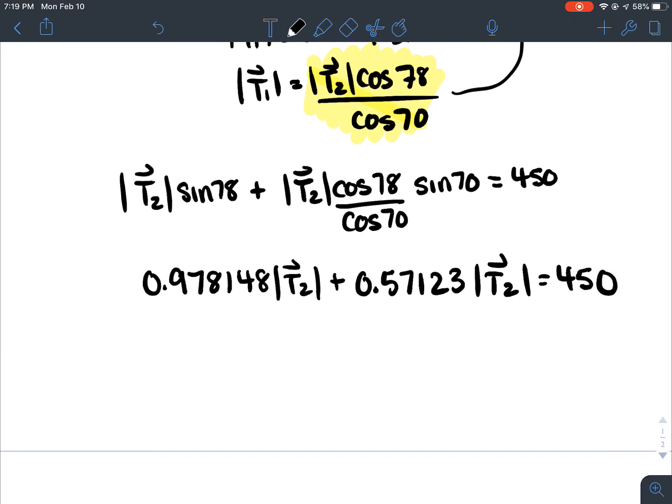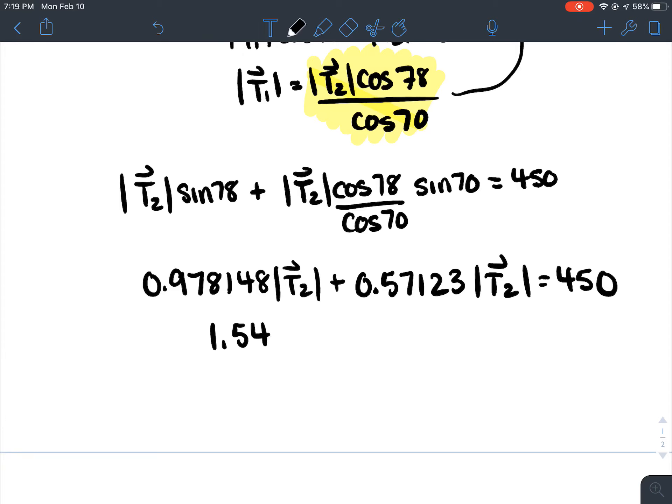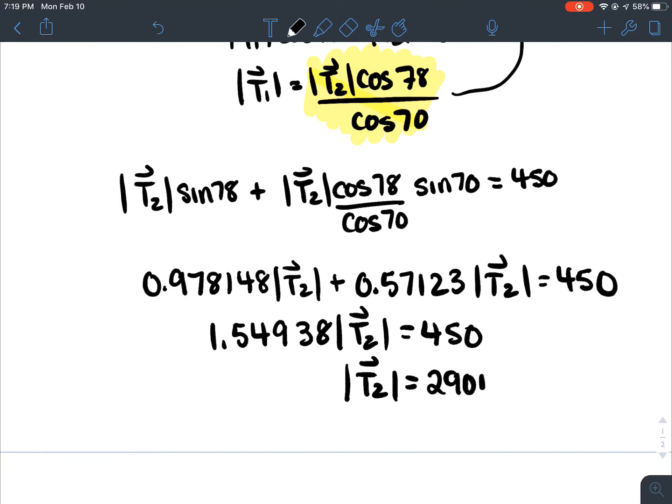Then you can add those together since they are like terms. So, I get 1.549. I'm just trying to keep a bunch of decimals because I want them to actually work out nicely. Okay, then I'll isolate T2 by dividing both sides by that. So, I'll do 450 divided by that. And I get 290 newtons. What's the answer? 290.